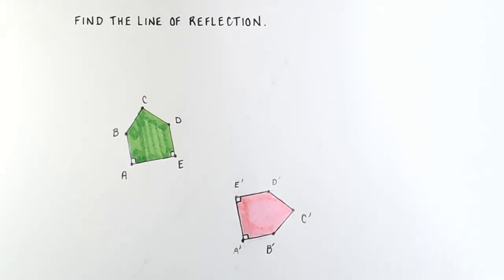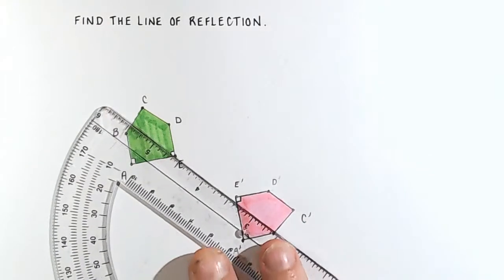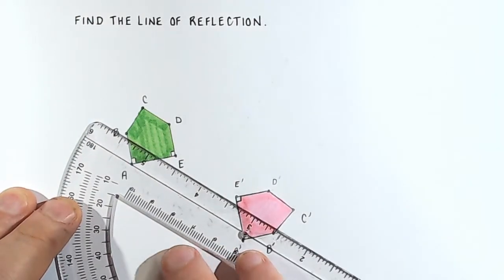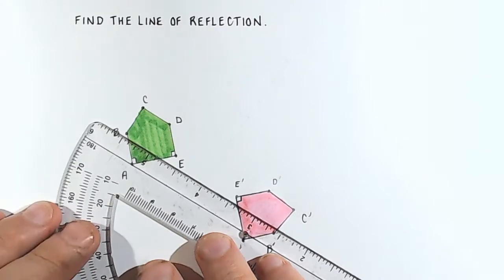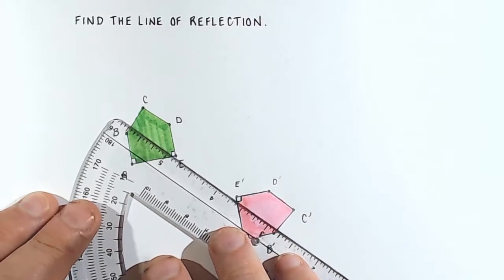So we're going to go in reverse now and find the line of reflection. This is not difficult. All we need to do is take a protractor and draw a line connecting two corresponding points. Any two points will do. Let's connect E and E prime.